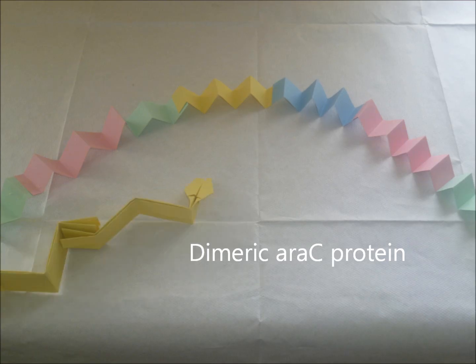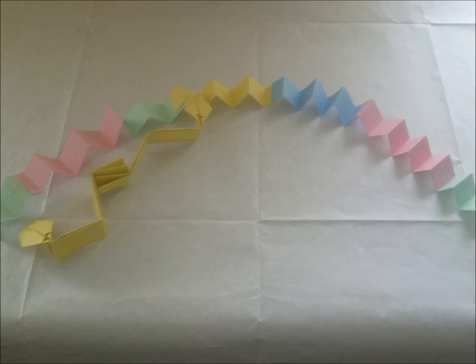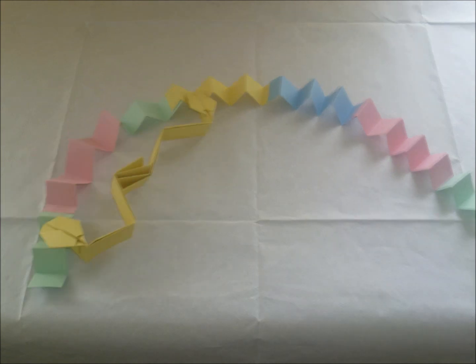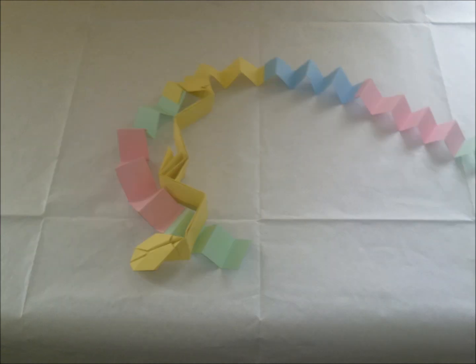During repression, a dimeric form of the RC protein binds to both the R02 and the RI1 sites. This causes the DNA strand to bend out of shape. As a result, RNA polymerase cannot bind and transcription of the Rb, Ra, and D genes is prevented. In this case, the RC protein is acting as a repressor.